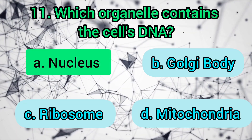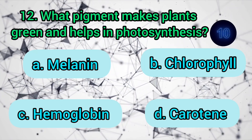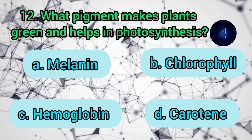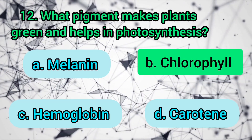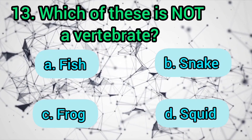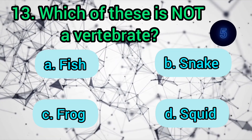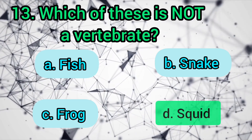What pigment makes plants green and helps in photosynthesis? Melanin, chlorophyll, hemoglobin, or carotin? The answer is: chlorophyll. Which of these is not a vertebrate? Fish, snake, frog, or squid? The answer is: squid.